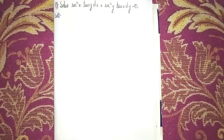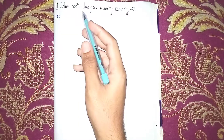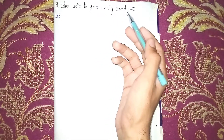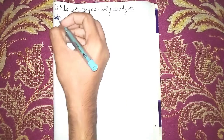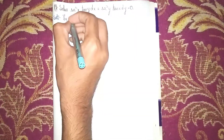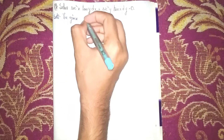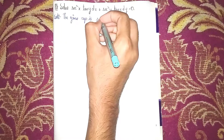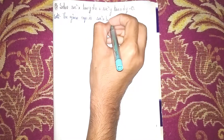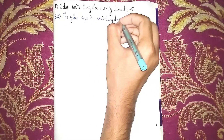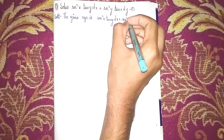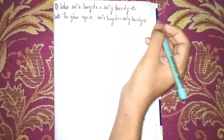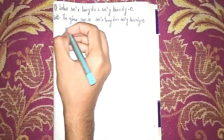Hello everybody, back to my channel. This question is to solve: secant squared x times tan y times dx plus secant squared y times tan x times dy equals zero. This is the given differential equation. We have to separate the variables.